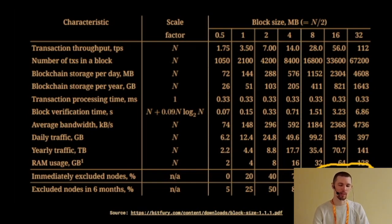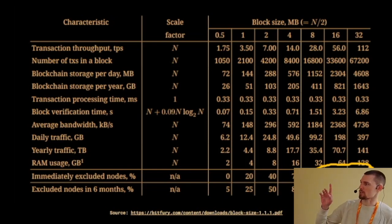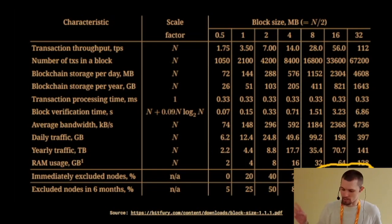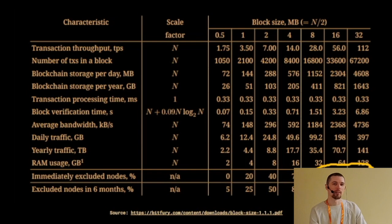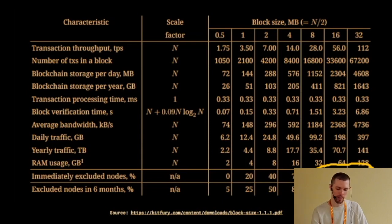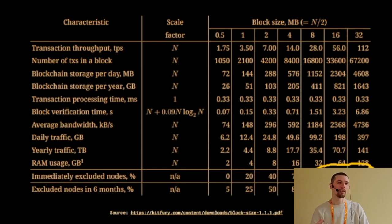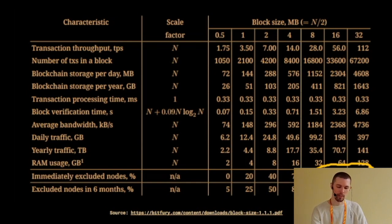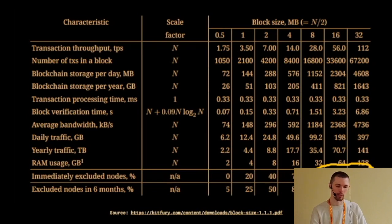Hal's intuition was backed up by empirical data through numerous studies, one of which was created and published by the mining group Bitfury. They showed that if you increase the block size to 8 megabytes, then within 6 months about 95% of the nodes are going to get knocked off the network, just because they're not powerful enough to keep up with such a large block size limit. As you increase the block size limit, it becomes more difficult for nodes to keep up unless they're also increasing their computing power, which increases the cost and increases centralization.